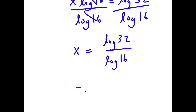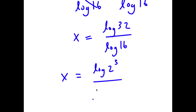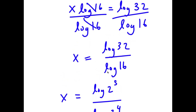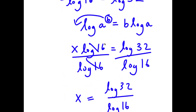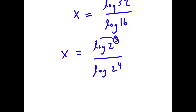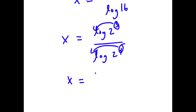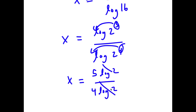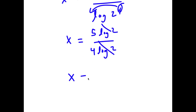Now log 32 is the same thing as log 2 to the power of 5, and log 16 is the same thing as log 2 to the power of 4. Applying the power rule again, I can move the exponents to the front, giving 5 times log 2 over 4 times log 2. These two log 2s cancel out, so x equals 5 over 4.